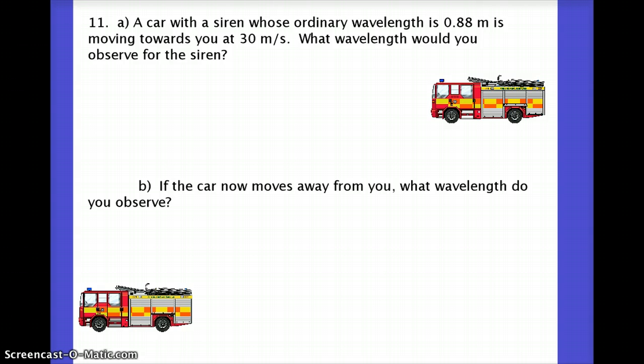So in 11, we've got some sort of vehicle, let's say an ambulance or a fire truck or whatever, and it's got what I'm calling an ordinary wavelength of 0.88. Now ordinary means that's what it would be when it's not moving. So I'm going to call that my lambda naught. You have to make that decision pretty carefully. And then it's moving towards me at 30 meters per second. Now that's the speed of the source. That's the speed of the car or the ambulance or whatever it is. And because it's moving towards, we have to make it negative.